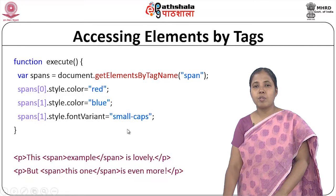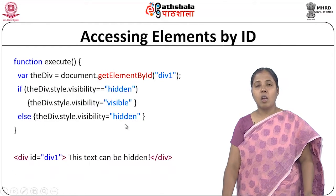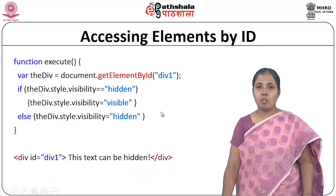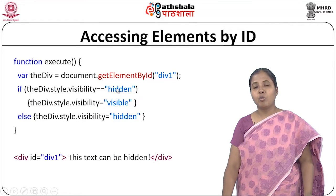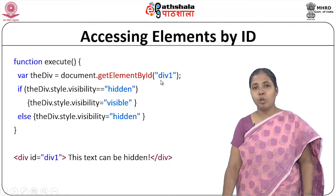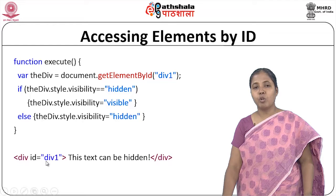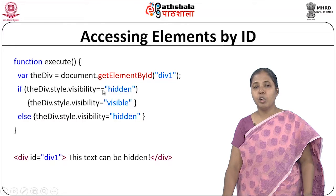To access elements by ID, use getElementById and give the name of the element's ID. When creating the element, use the id attribute to provide an ID — for example, 'div1' is the ID for a div element. You can retrieve the div element by its ID and change its style visibility from hidden to visible.